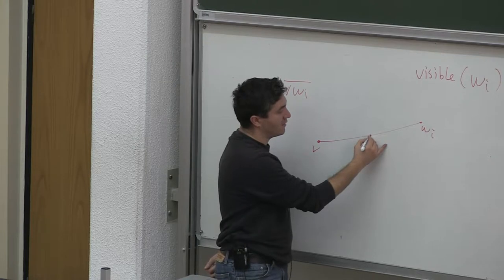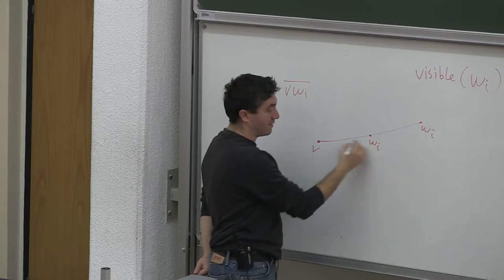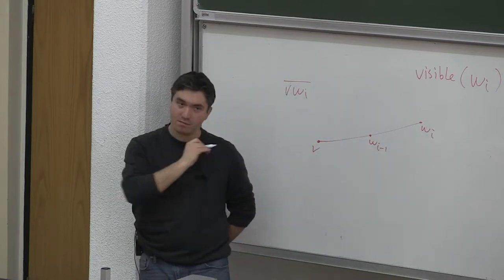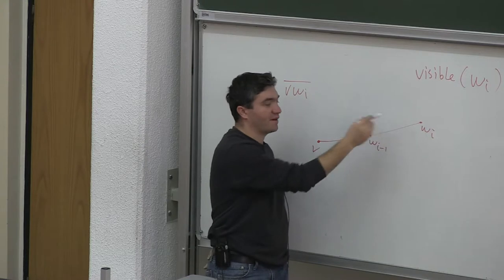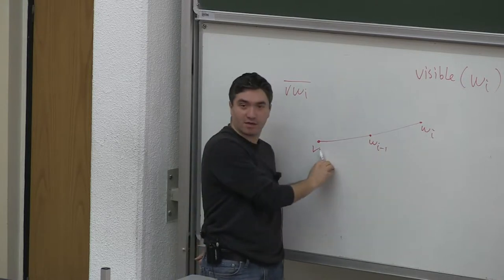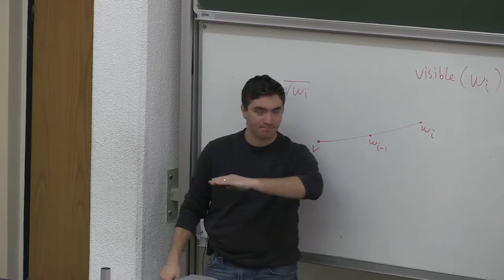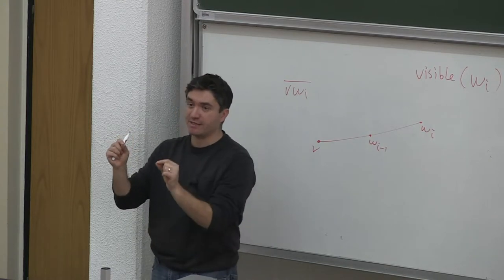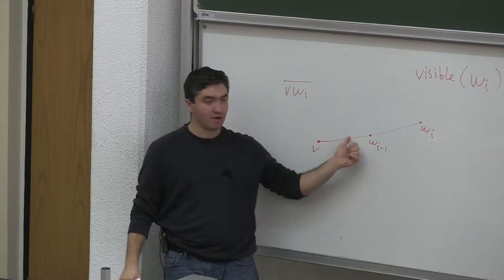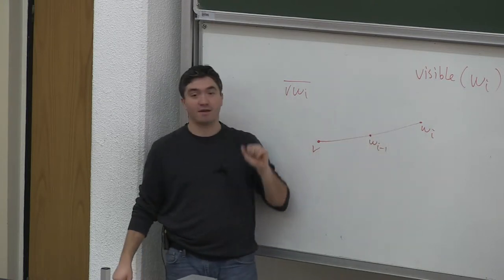Another event point we need to discuss: if on the same half-line there are multiple event points, a natural order to process them is by closeness. During sorting with respect to angles, if two vertices have the same angle, we check their distance to v and process the closer ones first. So if there's another point on line v-wi, it is processed before wi.